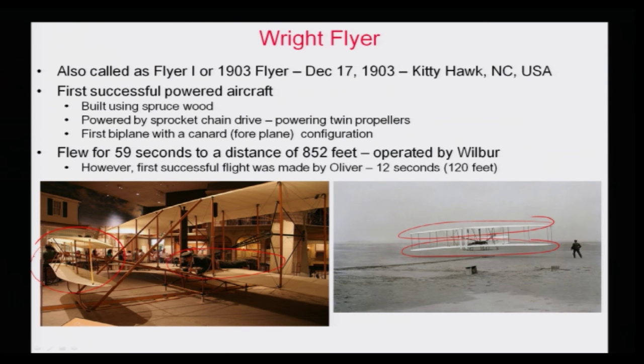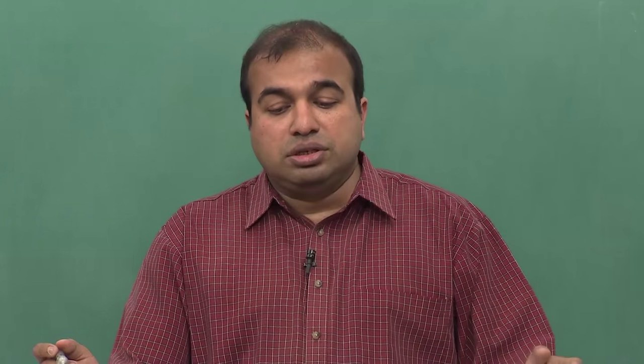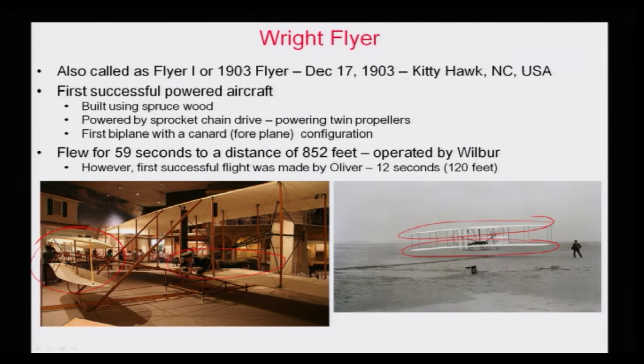There is an interesting story about this aircraft. Both Wright brothers finally took a toss to decide who would fly it first. The toss was won by Orville, who flew for 12 seconds and then crashed. It was a very small flight — 120 feet — and the airframe was damaged. They repaired it, and since Orville got the first chance, Wilbur did the second flight, flying for 59 seconds to a distance of 852 feet, which is recorded as the first official flight of human beings.